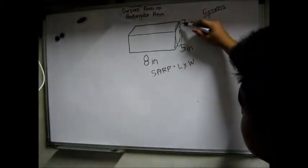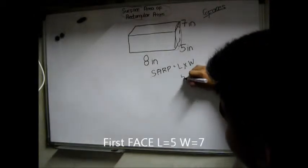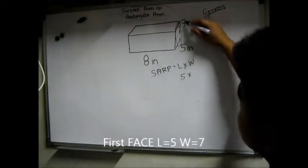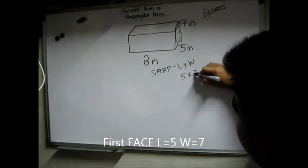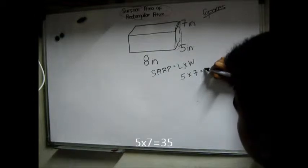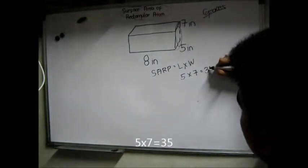The length of this first face is 5 multiplied by the width which is 7. Now 5 multiplied by 7 is 35. This first face area is 35.